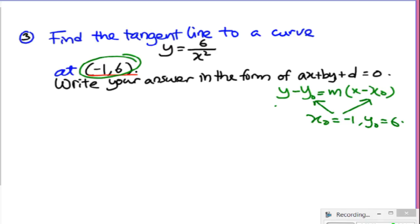How about m? m can be found by taking the derivative and evaluating it at x0, in this case negative 1. I need to find the first derivative of y. But first, I'm going to re-express my y as 6 times x to the power of negative 2, because writing it as x to the power of negative 2 will make it easier to take the derivative.